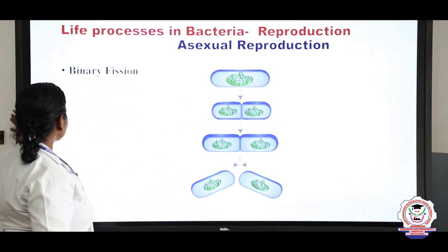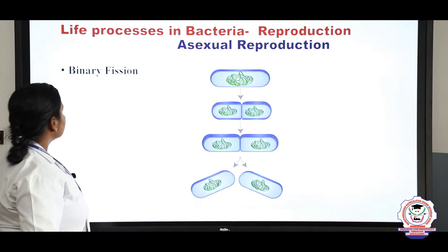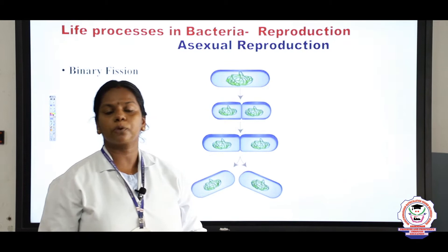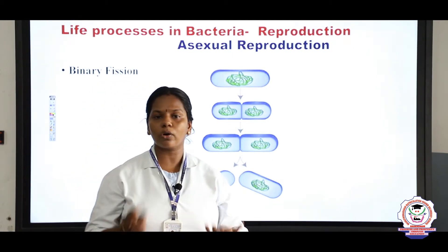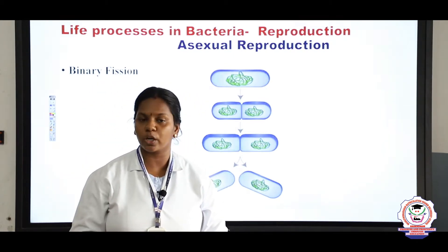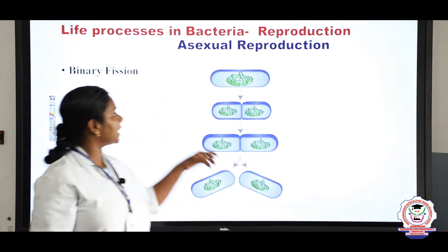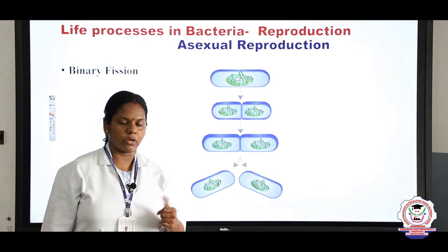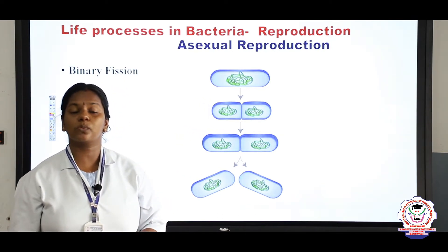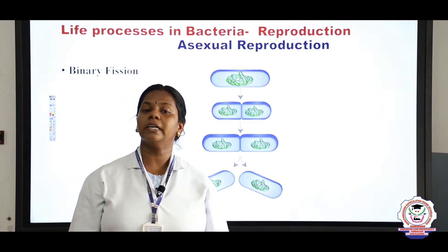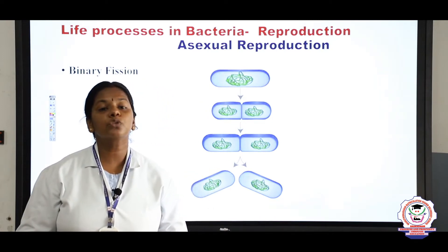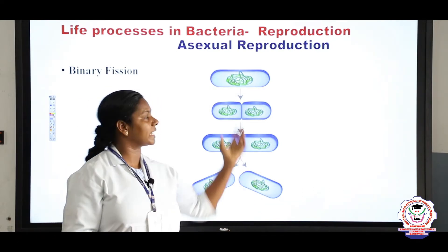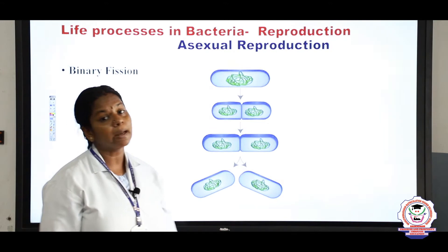First, this is reproduction in bacteria. What do you mean by reproduction, children? The process by which any organism produces its next generation, we call it as reproduction. Bacteria undergoes two types of reproduction: one is asexual and another one is sexual. Asexual reproduction does not involve the fusion of gametes, and the daughter individuals formed are exactly genetically and morphologically identical to the parent.